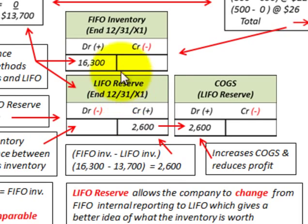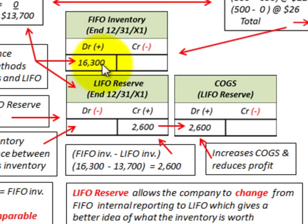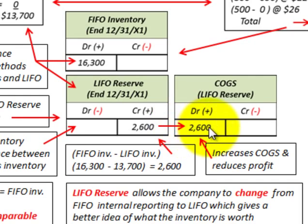This LIFO reserve account is a contra account to the FIFO inventory account. The $2,600 credit amount reduces the debit in our FIFO ending inventory by $2,600. So our FIFO ending inventory of $16,300 is reduced by this $2,600 credit to the LIFO reserve. The balancing debit entry goes to cost of goods sold, increasing it by $2,600.